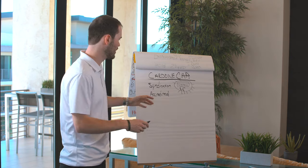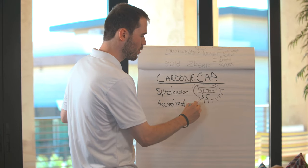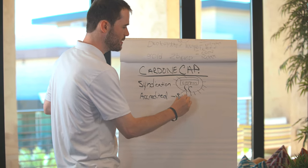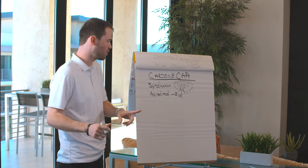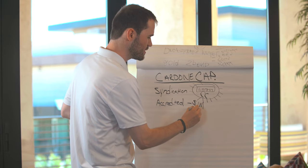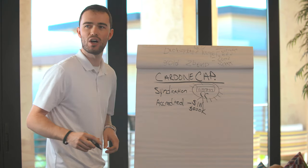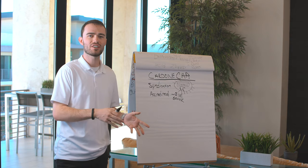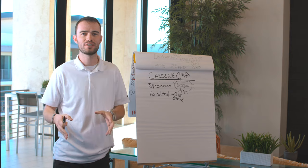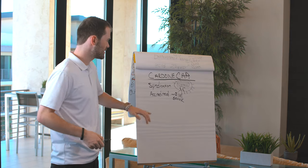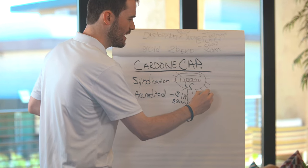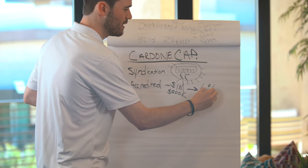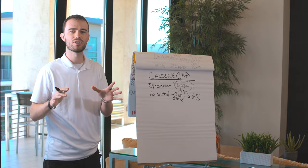Now first things first, to be an accredited investor, that means you are worth $1 million. That's not including your primary residence or make at least $200,000 a year for the two past years and have a projection to do the same this year. Now this is the accredited version, which Cardone Capital pays a preferred rate, we call it, of 6%. That number is annually.